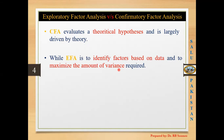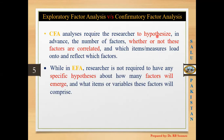CFA requires researchers to first hypothesize: the number of factors, whether or not these factors are correlated with each other, and which items load onto which factor. For example, certain items have to load on a certain factor, and all those items together will make one factor. In EFA, researchers are not required to have any specific hypothesis.